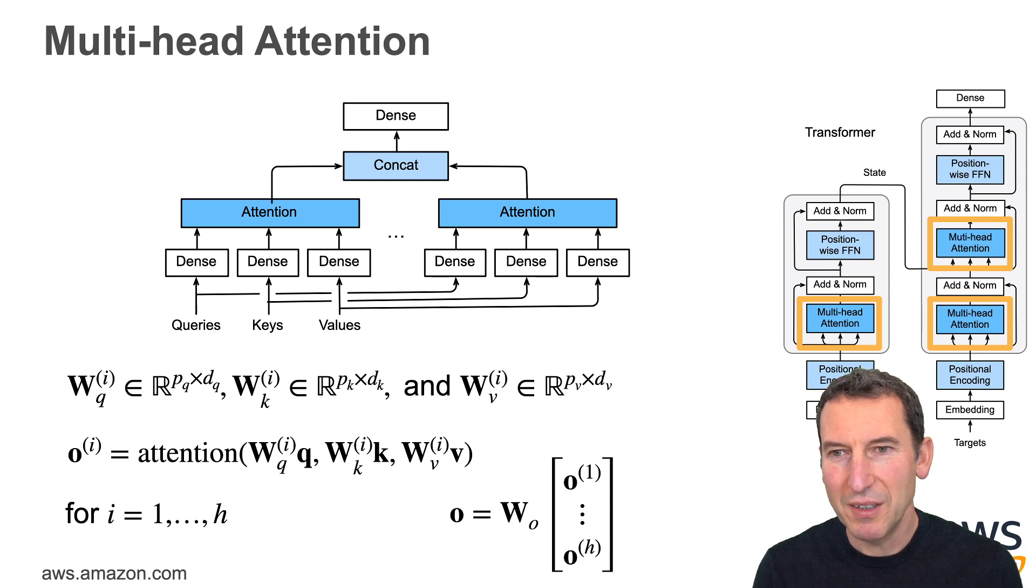In a little bit more math, I have the query weights, the key weights, and the value weights, because since now all three are the same, I need to transform them appropriately. Then I perform an appropriate attention mechanism operation between the query, the keys, and the values. I can, for instance, use a dot product or attention that we discussed before. And that's it.